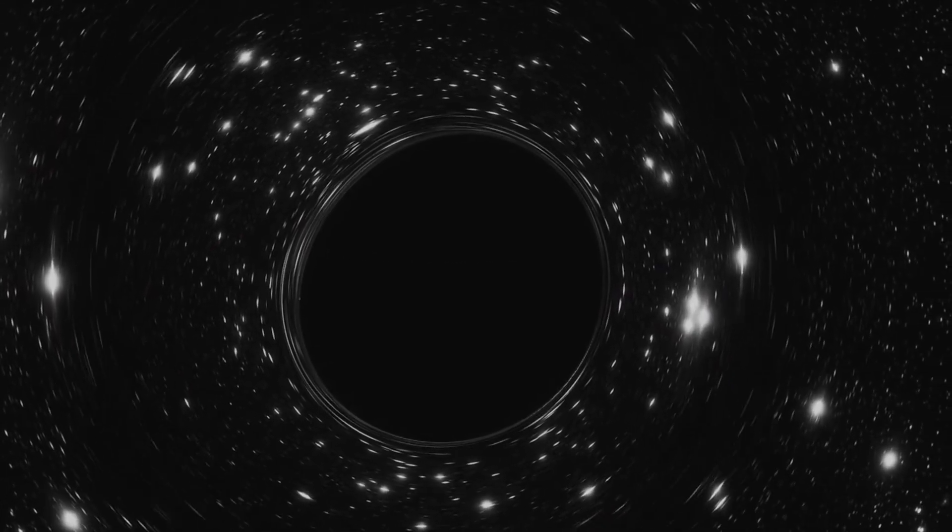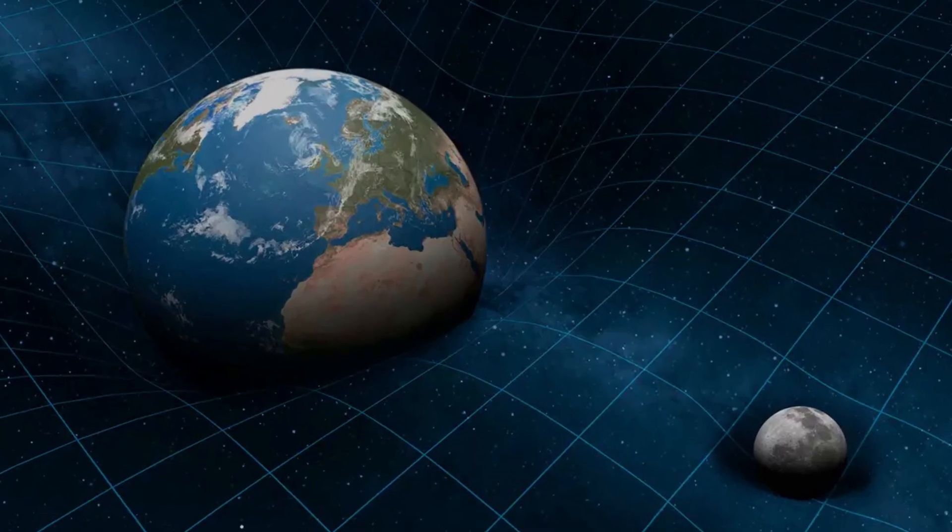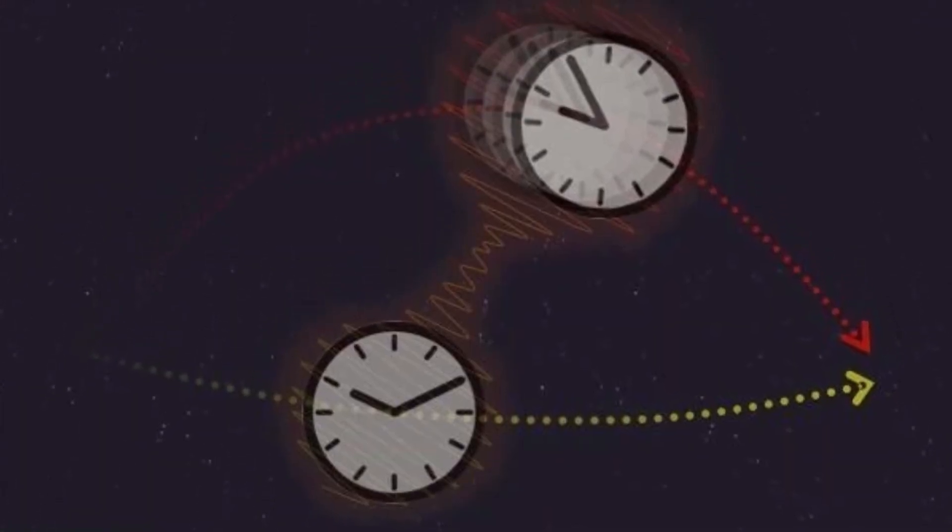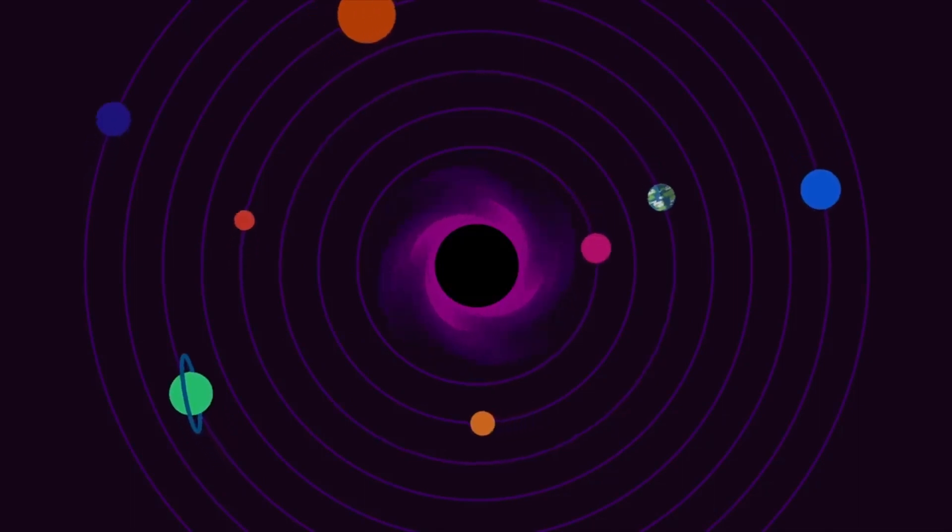Imagine the following scenario. Envision two clocks, one located close to a massive object, and the other near a significantly less massive one. Surprisingly, the clock near the massive object will tick slower than its counterpart in a less intense gravitational field.